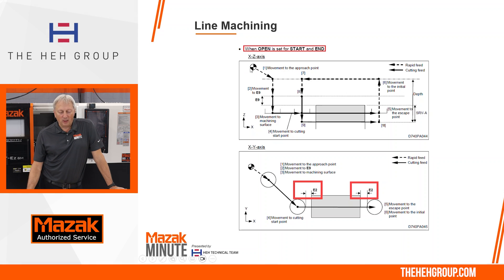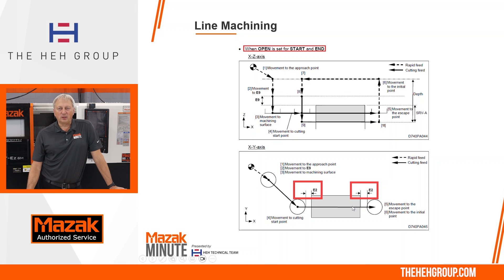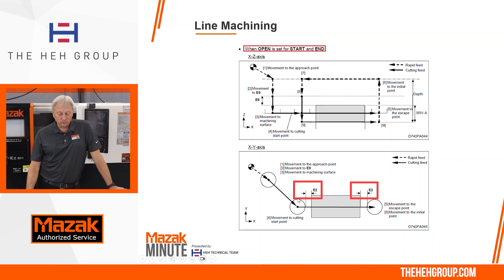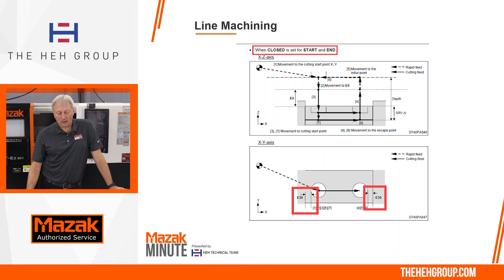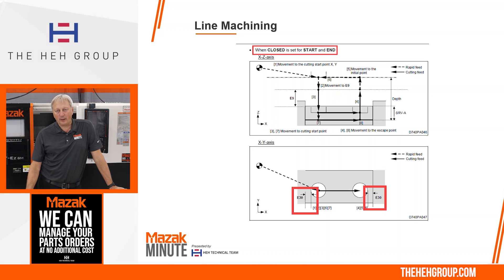For line machining in the open state, both for the start and end, the tool will start off the material. The program line would be from the edge of the material to the other edge, and the approach X and Y will be automatically calculated as a value of E2 away plus the radius of the tool. For closed, the E30 is the distance that it will stay inside the contained wall, so it will start away E30 plus the radius of the tool.